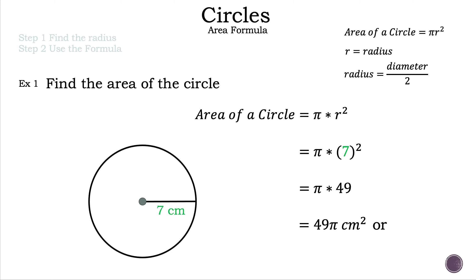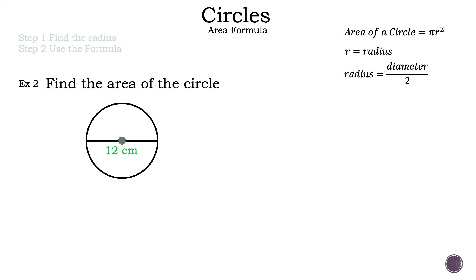Our next step is to convert that into a decimal. To do that, we multiply 49 and pi. Since pi is 3.14, we multiply 49 times 3.14, and the result is 153.94 — rounded to the nearest hundredth — with units of centimeters squared. We now have two different ways to represent the area of a circle with a radius of seven centimeters.